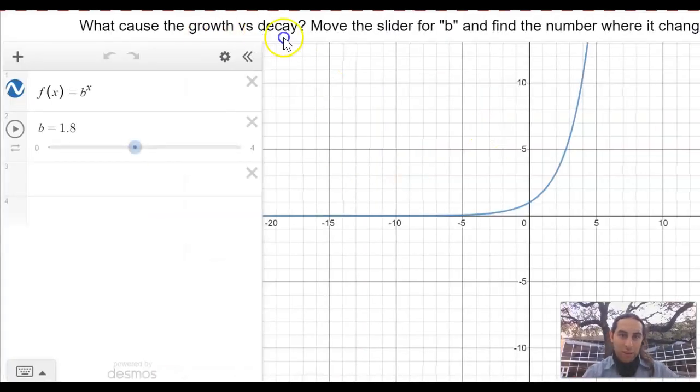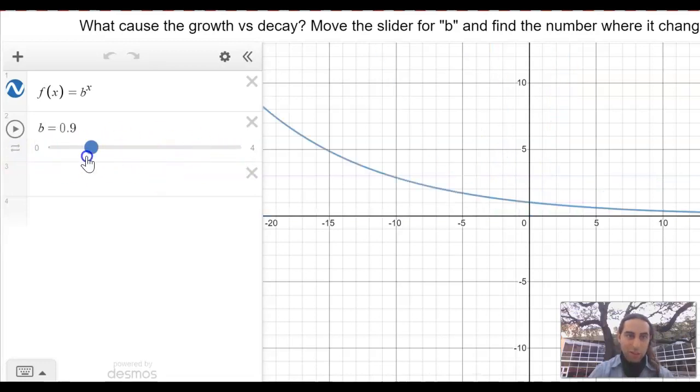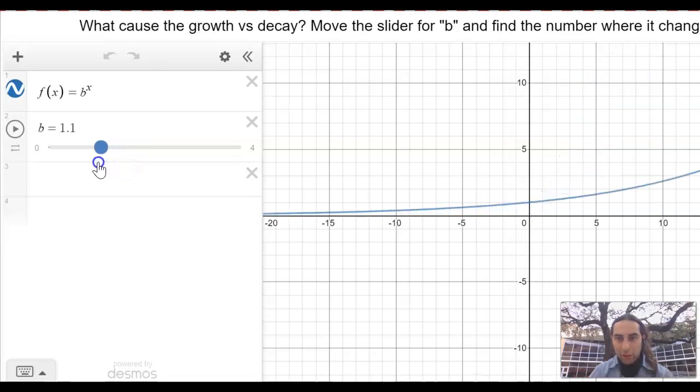Then what causes the growth versus decay? So we want to move the slider for b and find the number where it changes. Now, b to the x. This letter b right here is going to be some number. And when we move this, it's going to change what b is. So if you just start playing with that you see, it moves in all kinds of different ways. So let's start with a bigger number like two. So that looks like exponential growth. If I move it to the right, it gets even more steep. It's more growth, more growth. But I'm going to move it to the left. Now you can see how it's getting kind of flatter and flatter until it does what?